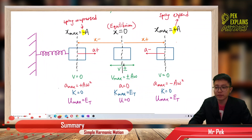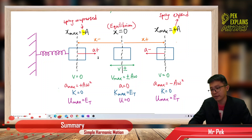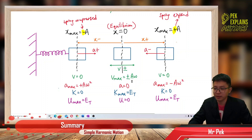Maximum velocity occurs at the equilibrium. When the object is at the center it could be going to the right or to the left, so velocity can be positive or negative — that's why maximum velocity is written as ±Aω.